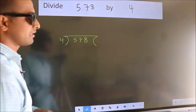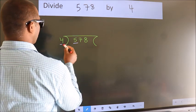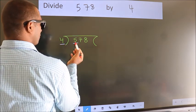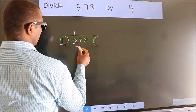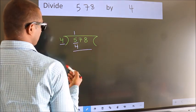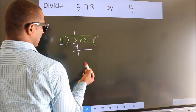This is your step 1. Next, here we have 5, here 4. A number close to 5 in the 4 table is 4 once 4. Now we should subtract. We get 1.